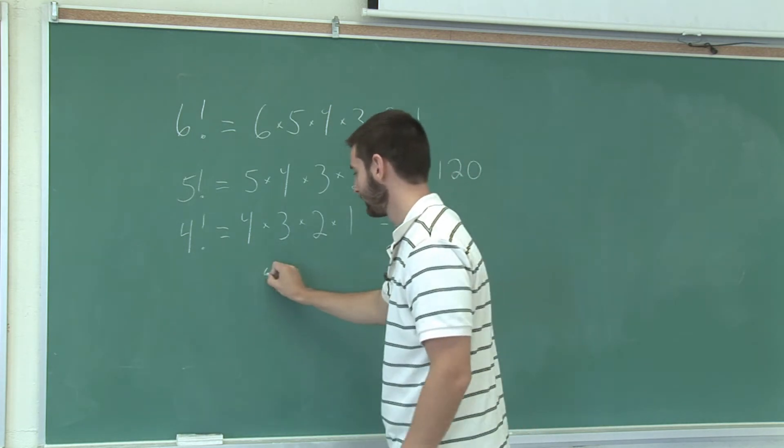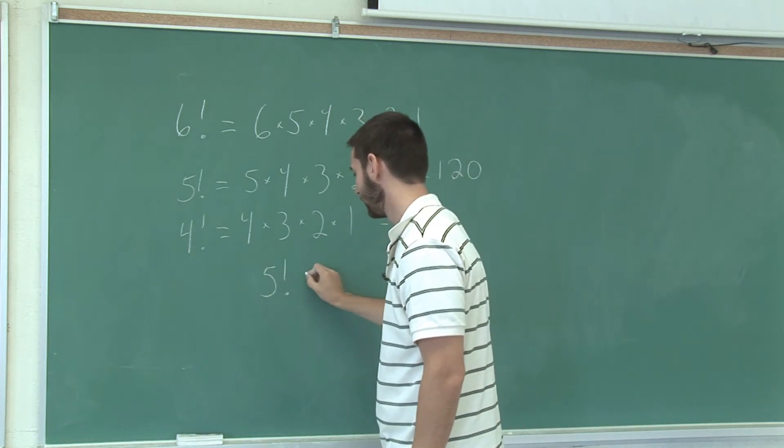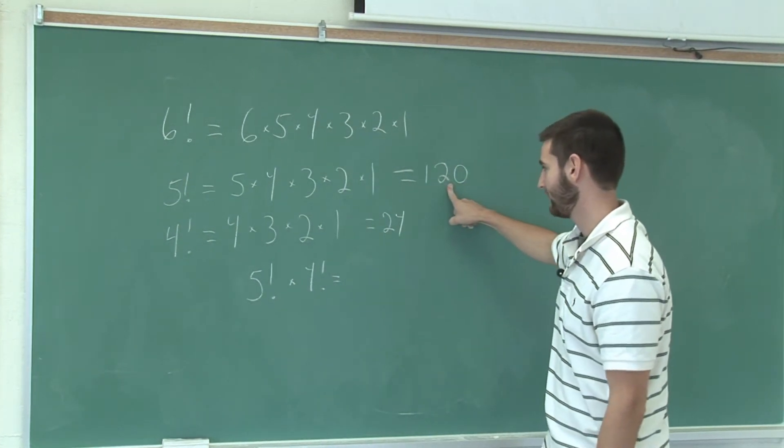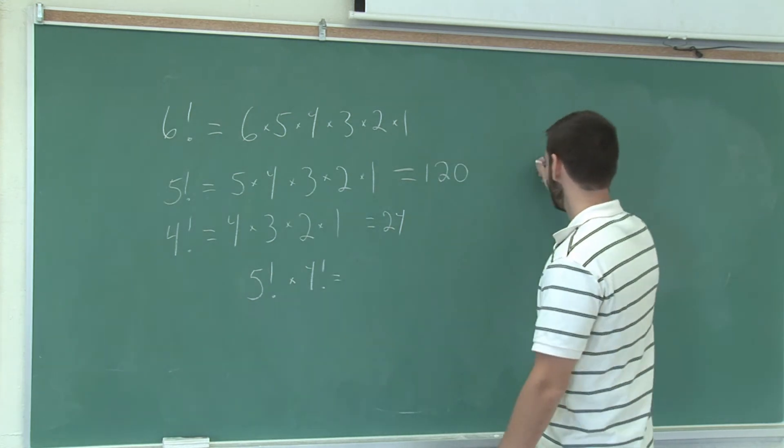To find what 5 factorial times 4 factorial is, we just multiply the value of 5 factorial times the value of 4 factorial. We'll do that here.